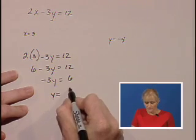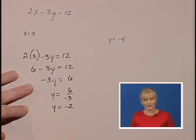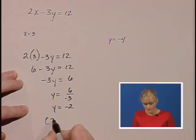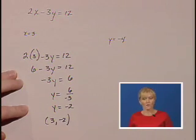And we'll have y equals 6 divided by negative 3, or y equals negative 2. So our ordered pair when x was the value 3, y was negative 2.